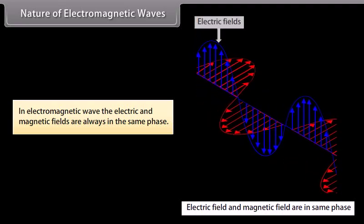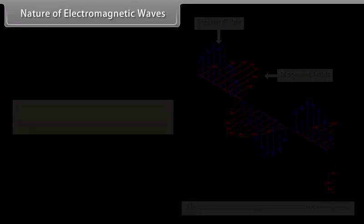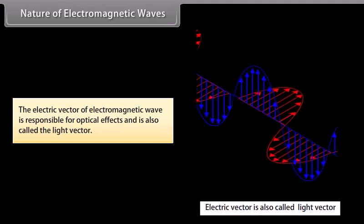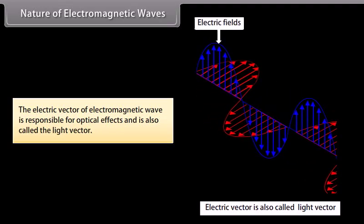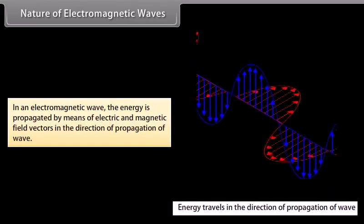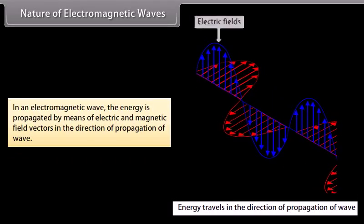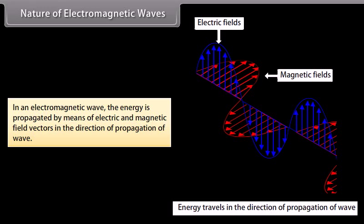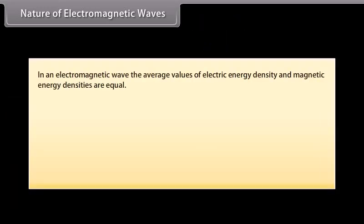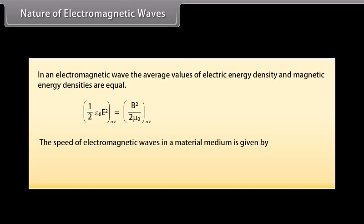In electromagnetic wave, the electric and magnetic fields are always in the same phase. The electric vector of electromagnetic wave is responsible for optical effect and is also called the light vector. In an electromagnetic wave, the energy is propagated by means of electric and magnetic field vectors in the direction of propagation of wave. In an electromagnetic wave, the average values of electric energy density and magnetic energy densities are equal. The speed of electromagnetic waves in a material medium is given by the relation nu is equal to C upon N.